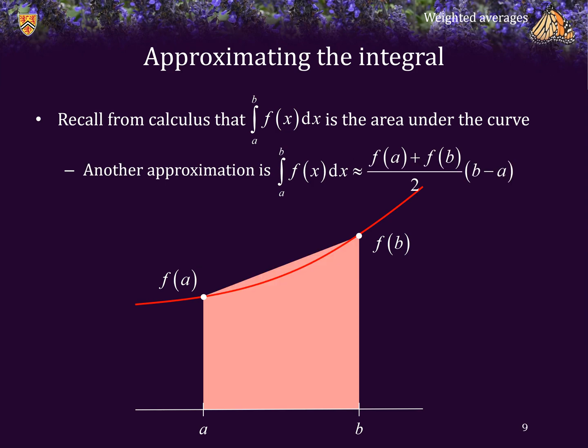Another approximation of the integral is to take the average of the value of the function at the endpoints. This gives us the formula we see here. You can either think of it as the average of the two endpoints, or it's also known as the trapezoidal rule for approximating the value of the integral. Once again, this is an okay approximation if f is almost straight on the interval from a to b.